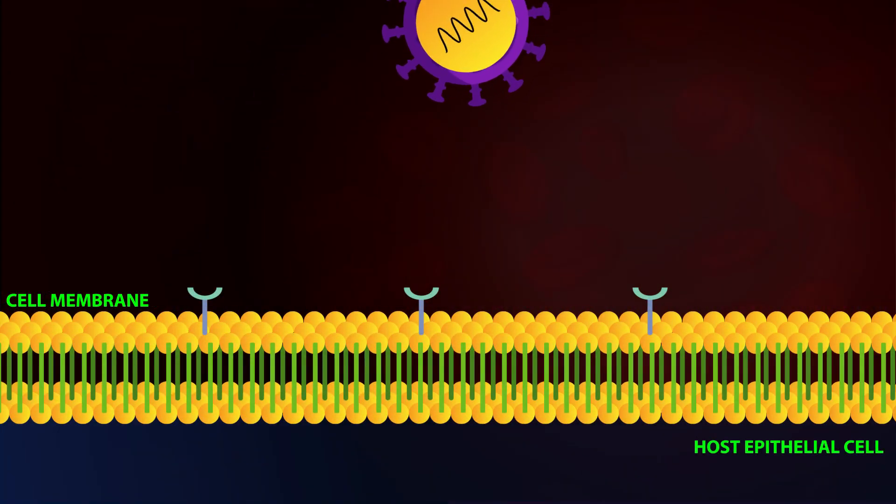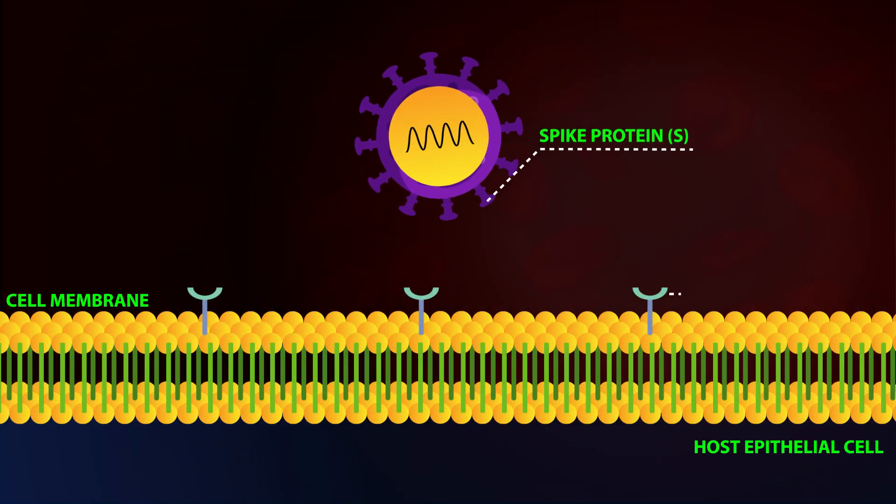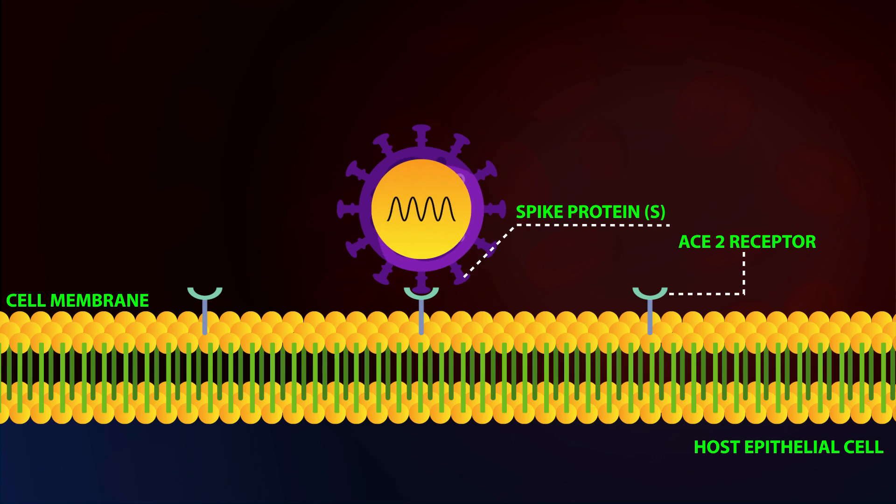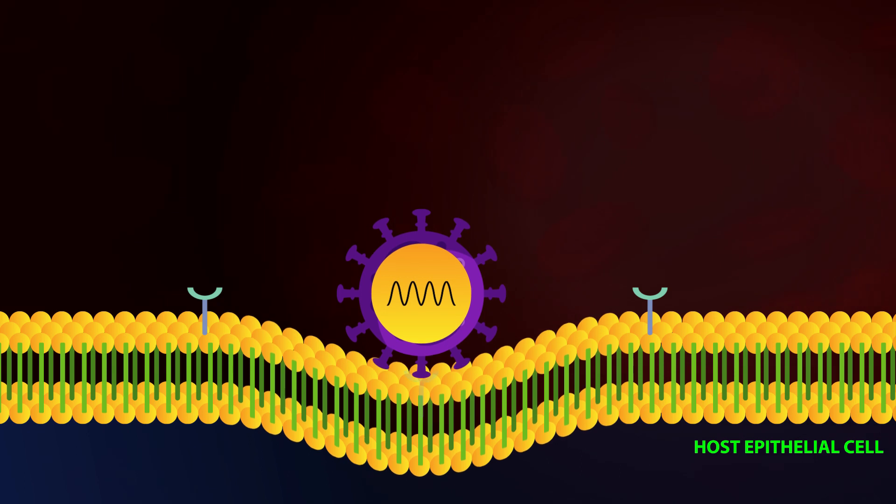The virus then enters the cell using the spike protein on its surface that binds on a receptor of the target cells. Viruses have their own genetic code, but they lack the machinery to copy their DNA.